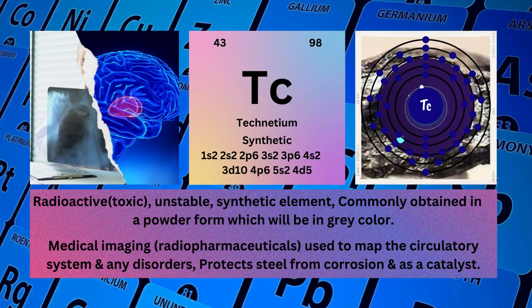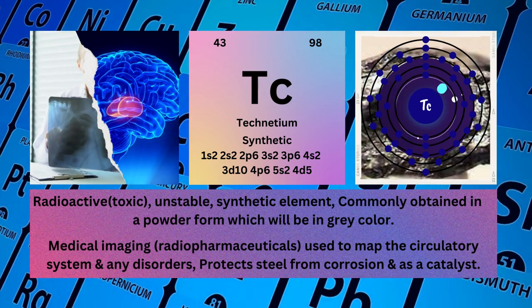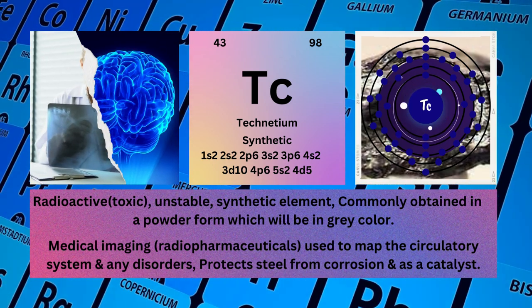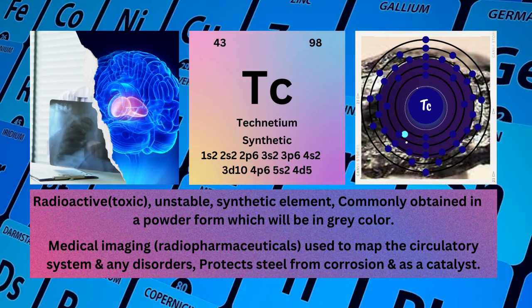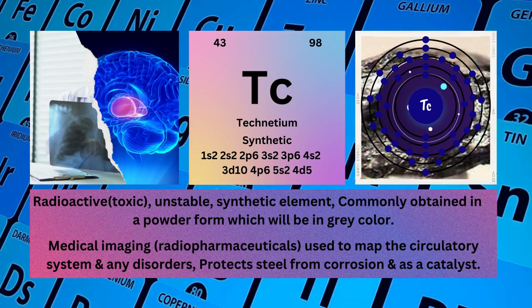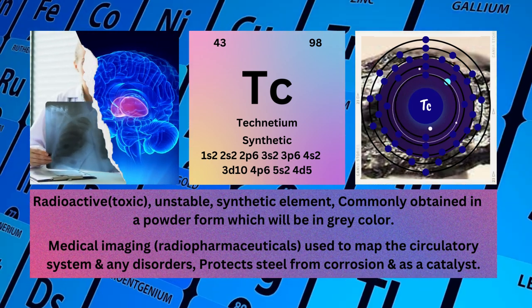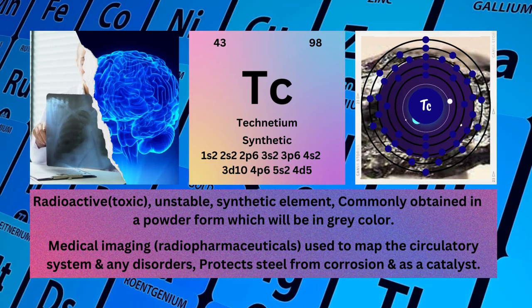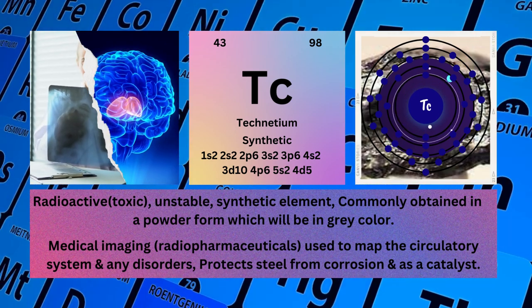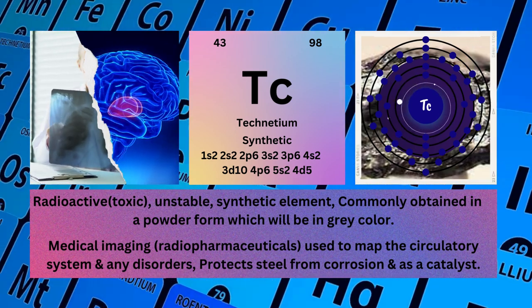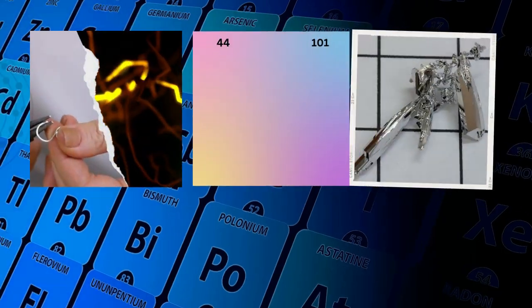Physical properties: radioactive, toxic, unstable, synthetic element, commonly obtained in powder form which is gray in color. Technetium is used for medical imaging, radiopharmaceuticals, used to map the circulatory system and any disorders, protects steel from corrosion, and as a catalyst.